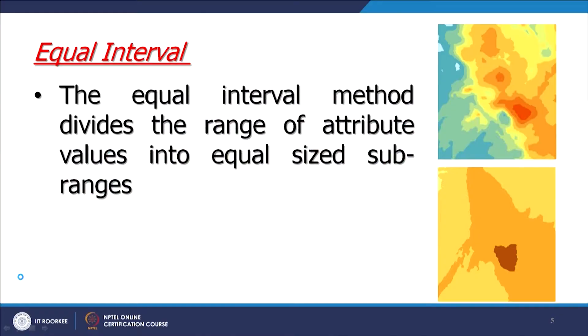An expert can do the classification into different categories and then that map becomes much more understandable and usable. Also, sometimes we use classification to hide something or to highlight something — it is also very useful. In digital image processing there is a technique called density slicing or masking, and we can also do that kind of classification. The first method, equal interval, is very simple: the entire range of attribute values is divided into equal size categories or sub-ranges.